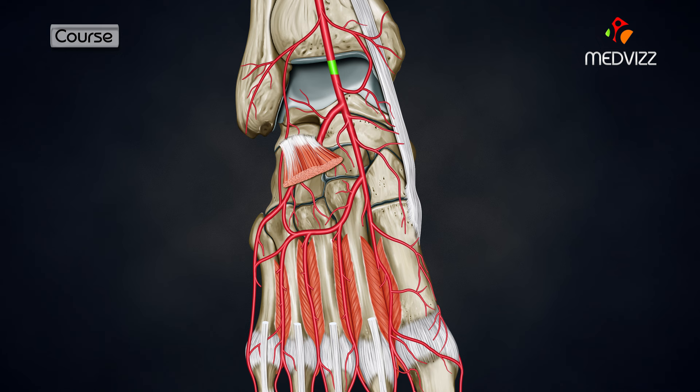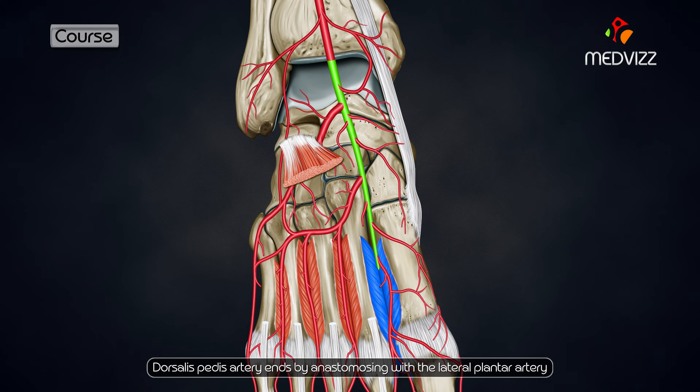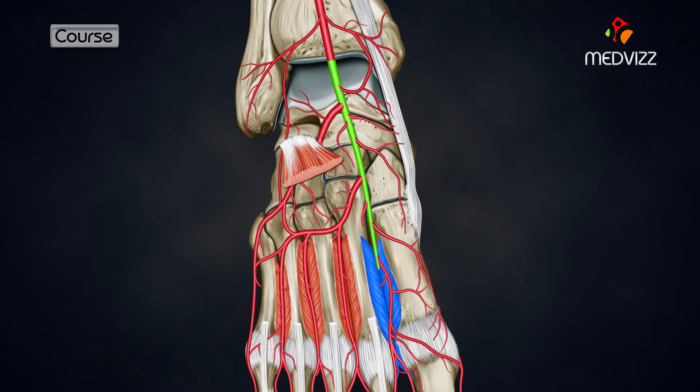Regarding its course, it passes forward along the medial side of the dorsum of the foot to reach the proximal end of the first intermetatarsal space, where it dips downwards between the two heads of the first dorsal interosseous muscle to enter the sole of the foot. It ends by anastomosing with the lateral plantar artery, which represents the continuation and termination of the dorsalis pedis artery.